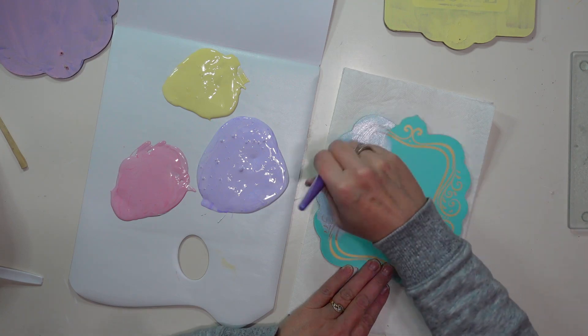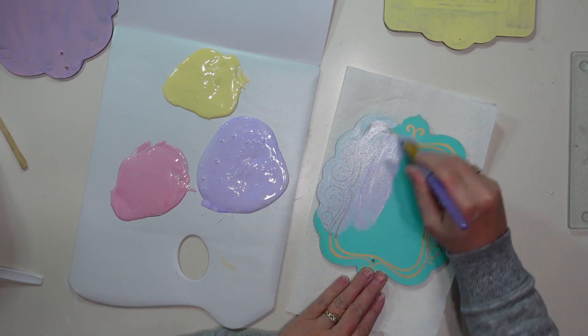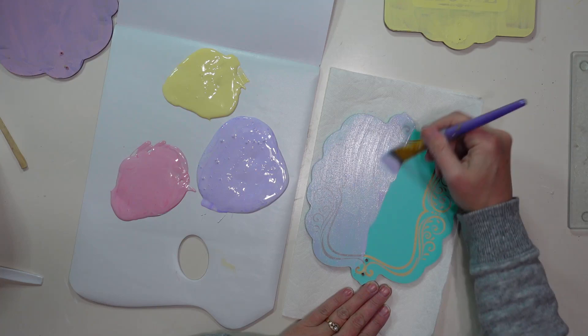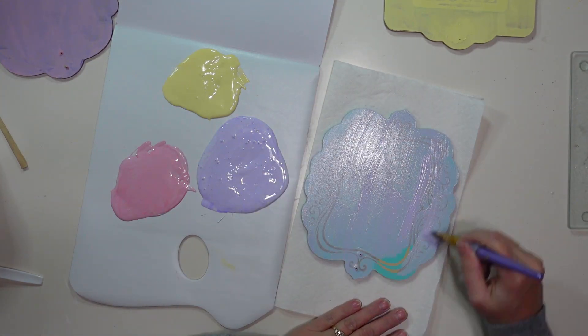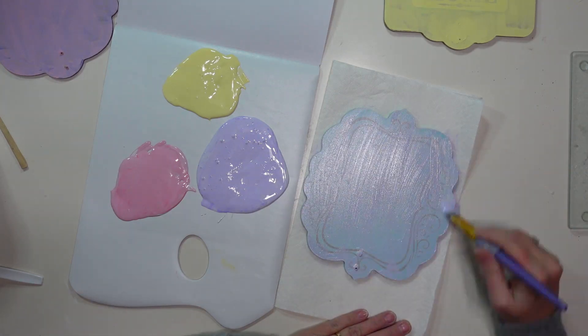Next I mix some of my pastel paints with a little bit of white to kind of lighten them up and then I'm painting my signs. I was going to do one in each of these colors but I decided not to do the pink and just to do the yellow and the lavender.